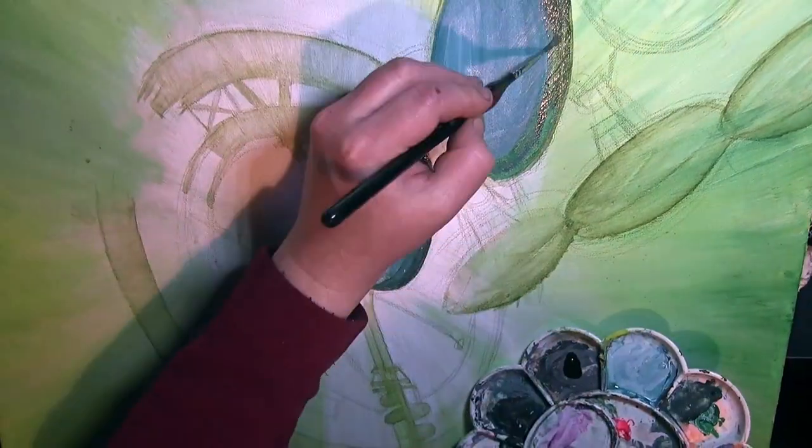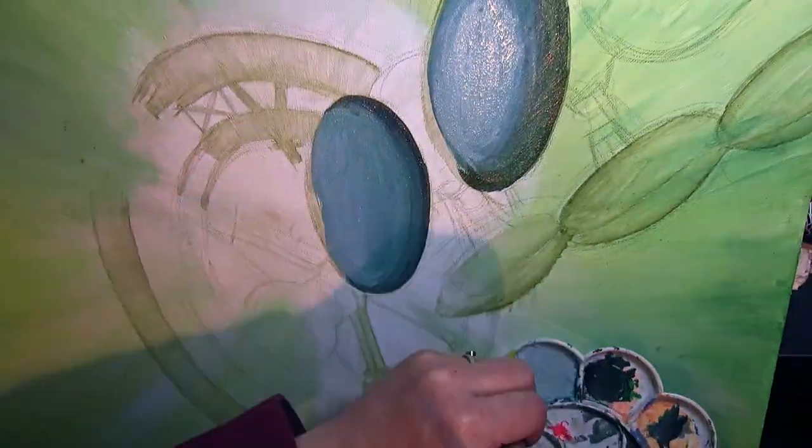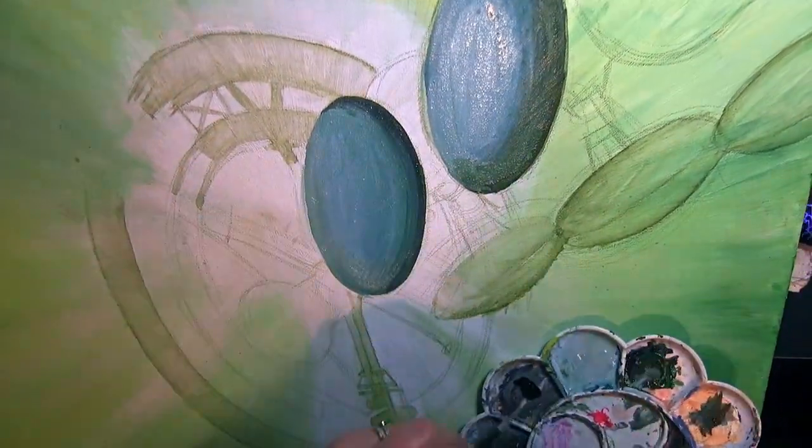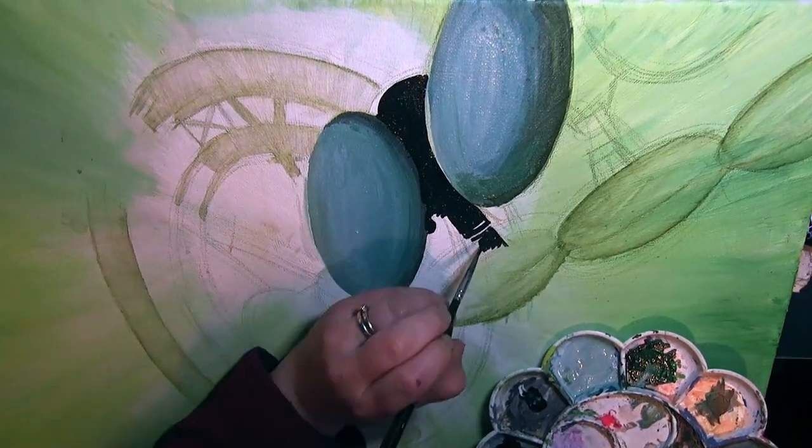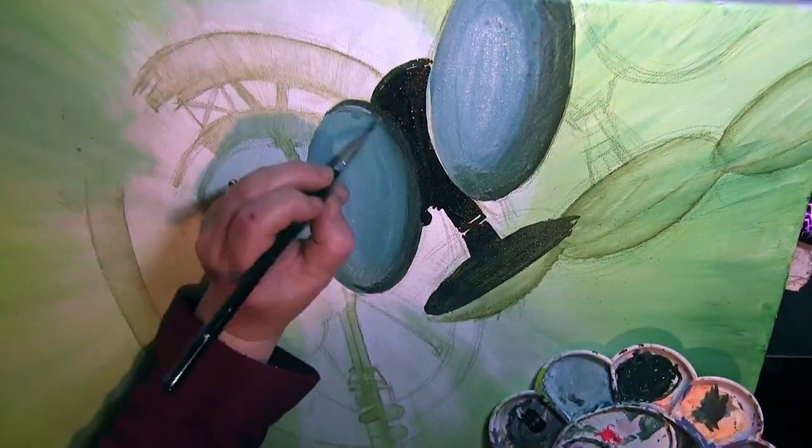But yeah, there's eight of these centre points of the Thargoid invasion. And the eight strongholds have all got like 30-odd systems that they've attacked surrounding them.